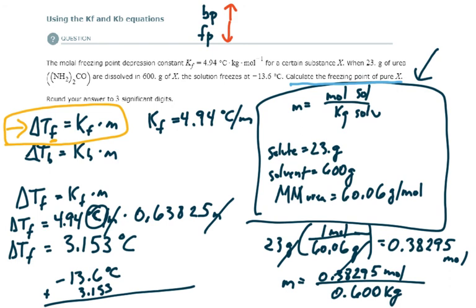It's negative 10.447 degrees Celsius. And the three significant digits, that's going to be negative 10.4.